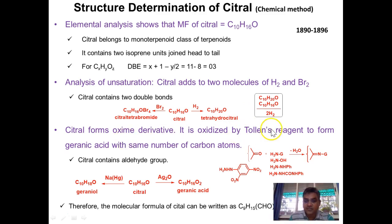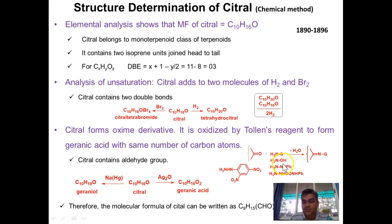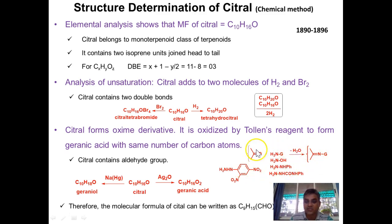Now let us see the nature of oxygen. Two experiments were performed. First, reaction with hydroxylamine hydrochloride or 2,4-dinitrophenylhydrazine showed that citral forms an oxime, phenylhydrazone, or DNP derivative. This indicates that citral contains a carbonyl group. Carbonyl can be either aldehyde or ketone, so a distinguishing test between aldehyde and ketone was then performed using Tollens' reagent.